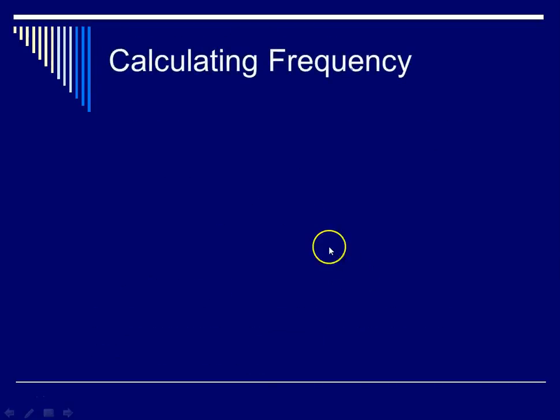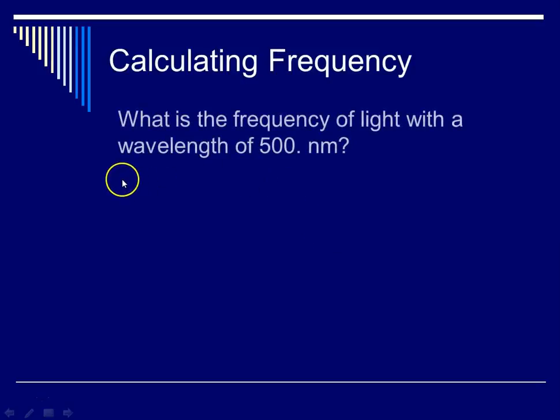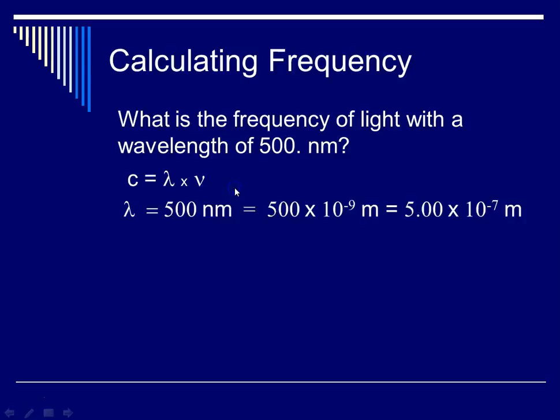So let's do a practice problem calculating frequency. What is the frequency of light that has a wavelength of 500 nanometers? Now remember, a nanometer is 10 to the minus 9 meters. So let's identify variables. Our equation is C equals wavelength times frequency. Our wavelength is 500 nanometers, which is the same as 500 times 10 to the minus 9 meters. But wait, that's not proper scientific notation. So let's move that decimal place over, and that's going to give us 5.00 times 10 to the minus 7 meters.